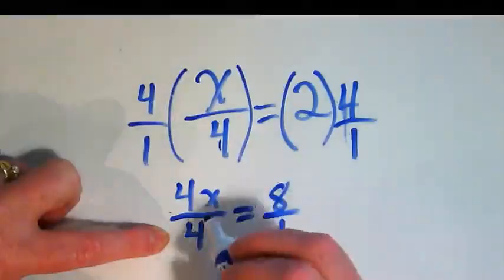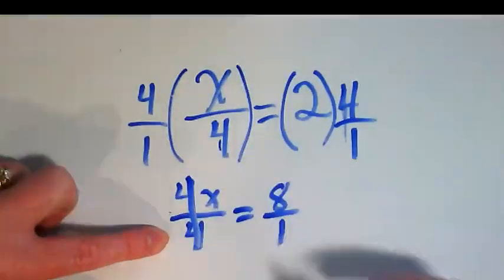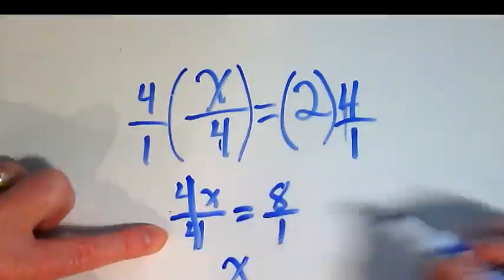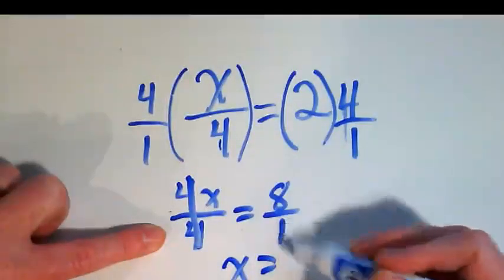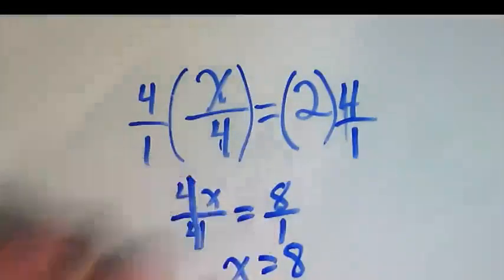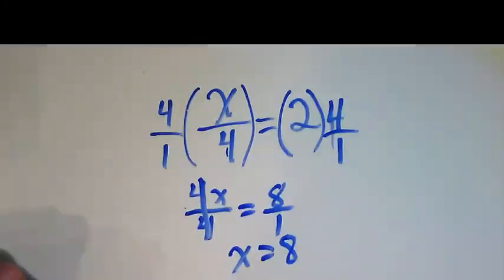4 over 4 is equal to 1. That becomes invisible 1, leaving us with just x. 8 is over 1. 8 divided by 1 is just 8. So we can also make that 1 invisible and our x is equal to 8.